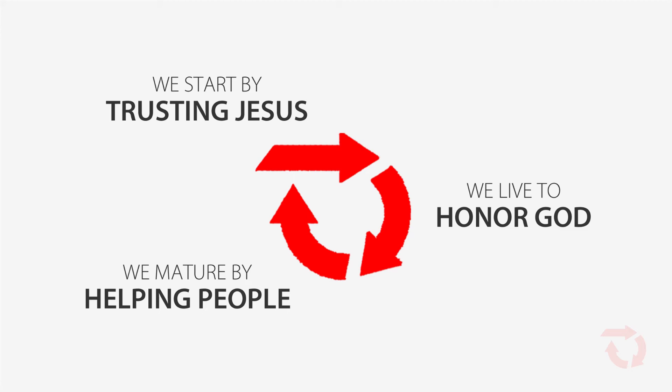The third and final arrow represents the third foundation truth: we mature by helping people. You don't become mature just when you honor God with your life and know a lot about Jesus and the Bible — you're really mature when you figure out it's not about you. A student ready to mature by helping others realizes that youth group, church, and small group are not primarily about them and what they get out of it. It's about honoring God and helping others. This kind of student longs to serve and bring their friends into a relationship with Jesus Christ. They don't complain when things don't go their way, because they realize it's not about them — it's about other people.